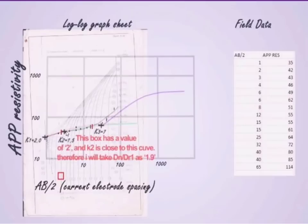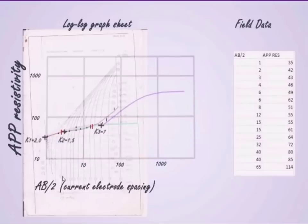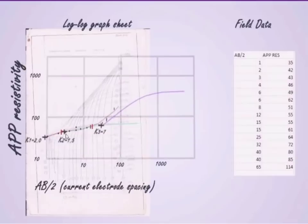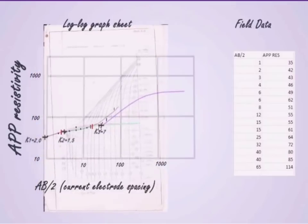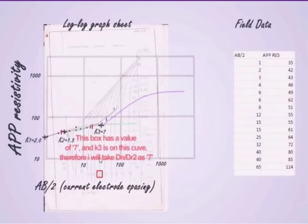And to get the second one, you put the K2 on the origin and read off the value of the curve that is close to K3. And in this case, if you look closely, you would see that one of our curves, the value falls at 7. Yes, it's a 7 here. So the value of the box for the K3 is 7. So therefore my DN/DR2 will be 7.